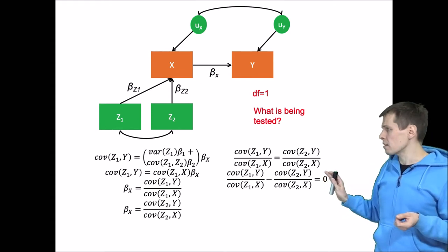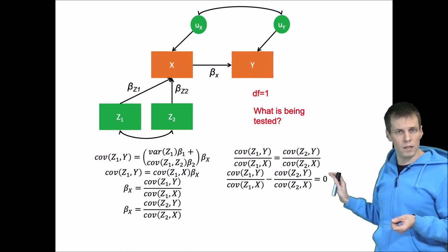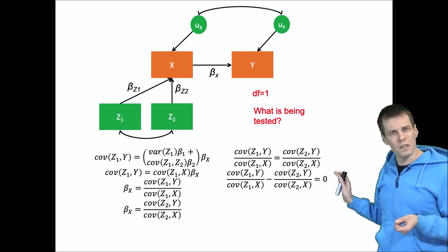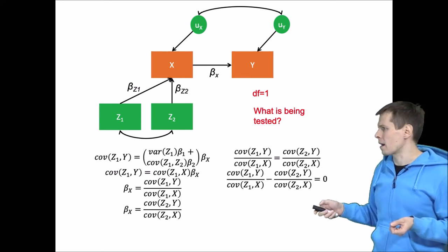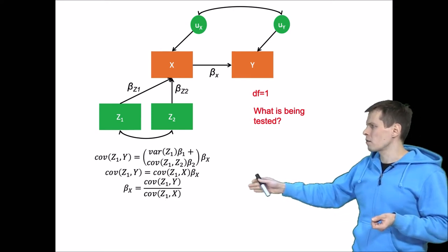But this doesn't really tell us—this is the covariance that we are testing—but it doesn't really tell us what is the meaning of that test. So what exactly is being tested with this one degree of freedom? So let's take a step back and let's go back to this equation.